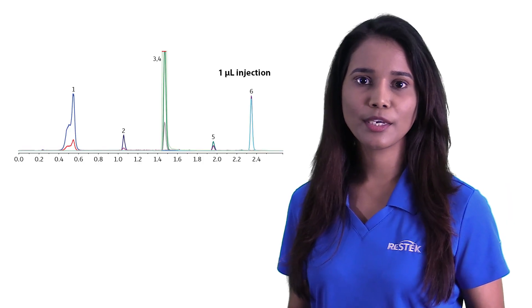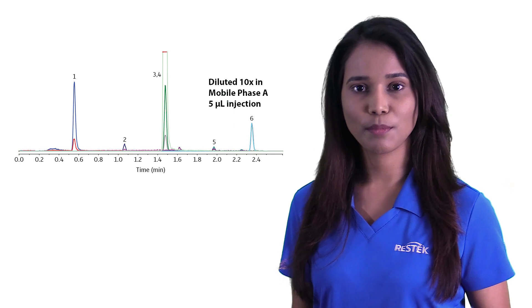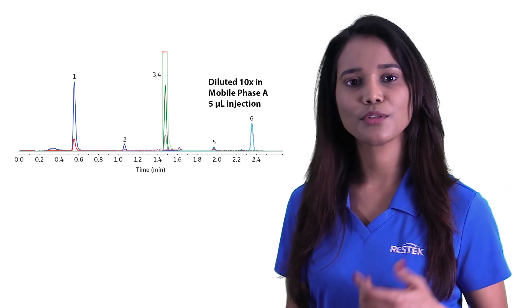You should always strive to match the aqueous to organic ratio as well as the buffer strength of the sample diluent to the start of the gradient. If you do not, it can affect elute retention time and peak shape.